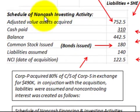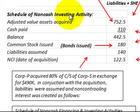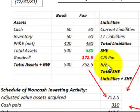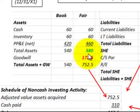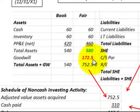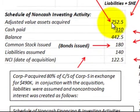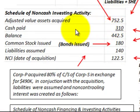In conjunction with the acquisition, liabilities were assumed and non-controlling interest was created. On the supplemental schedule for non-cash investing and financing activities, the first item is the adjusted value of the assets acquired — in this case $752,500. That comes from the subsidiary's balance sheet: total assets adjusted to fair value at $580,000, plus goodwill of $172,500, giving total adjusted assets of $752,500.